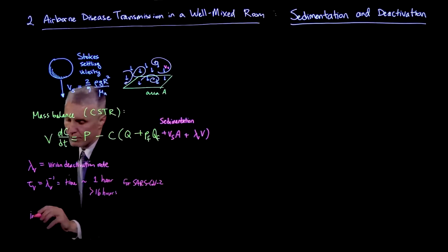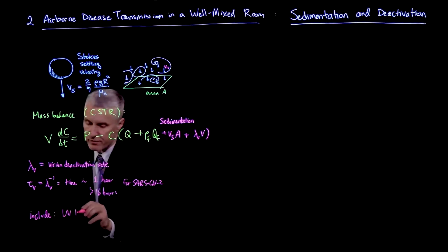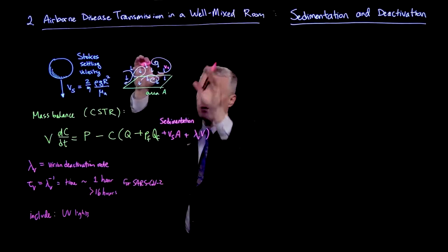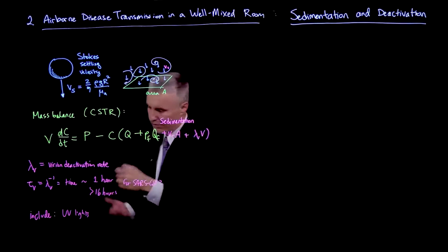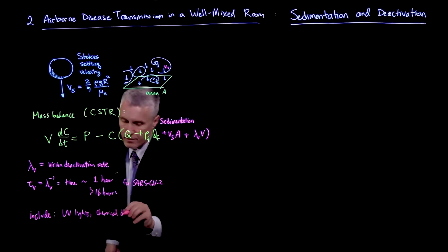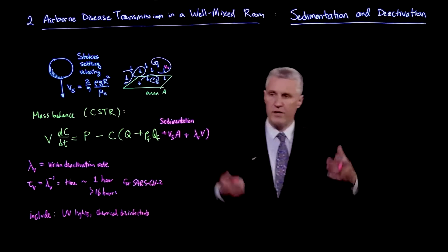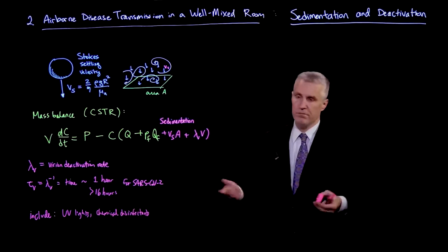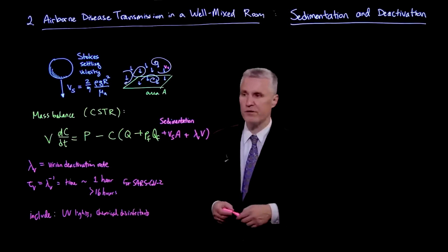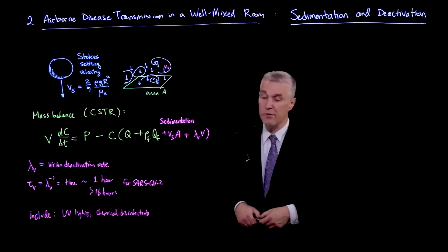Also, this could include effects such as UV light treatments, which might be operating in a certain part of the room, but then the air circulates and we're essentially treating a significant part of the volume. It could also be chemical disinfectants. There are various chemicals that can be sprayed in the air, which are believed to essentially deactivate the virions, although they may cause other harmful effects.